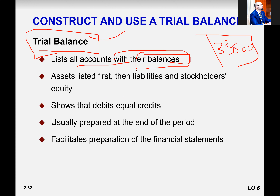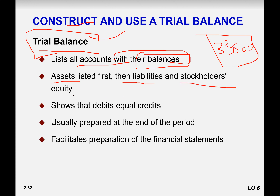We make a statement in which we list all the accounts and their balances. We list them according to liquidity — first we write down the assets according to their liquidity, meaning current assets first and then long-term assets. Then we write liabilities — first current liabilities, then long-term liabilities — and then stockholder equity.